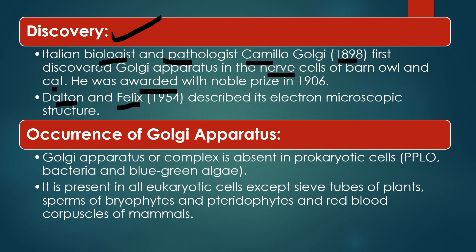Now let's talk about where Golgi bodies are present. Golgi bodies are absent in prokaryotic cells; they are only present in eukaryotic cells. However, even in eukaryotic cells there are some exceptions where they are absent: sieve tubes of plants, sperms of bryophytes and pteridophytes, and red blood corpuscles of mammals.